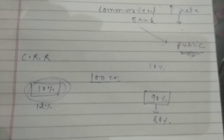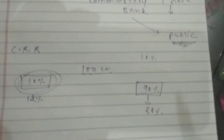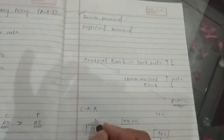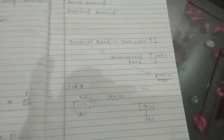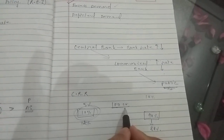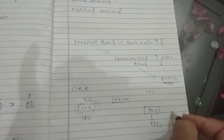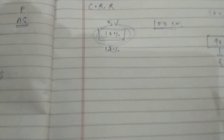When availability of credit in the market is reduced, people cannot demand more credit, and this helps in correcting the situation of excess demand. Similarly, when there is deficit demand, RBI reduces the CRR — for example to 5% — giving banks more funds, which increases credit availability in the market and helps correct deficit demand.